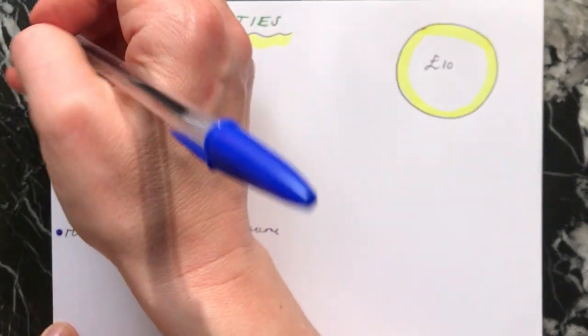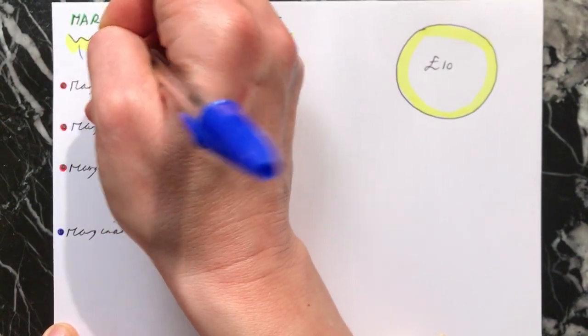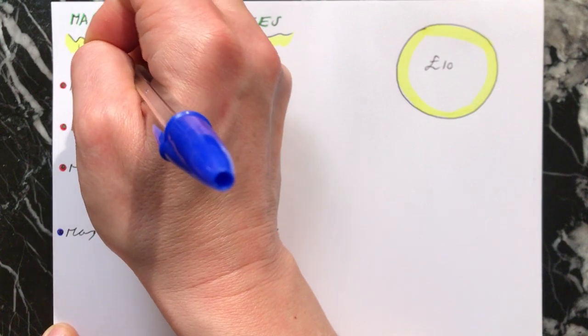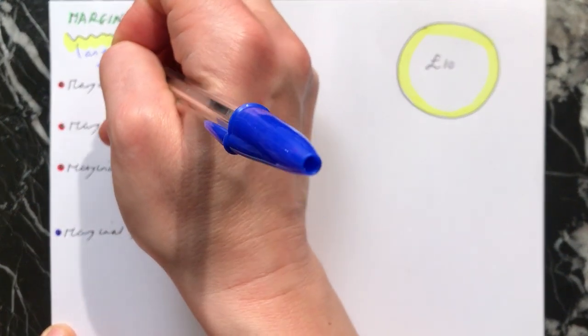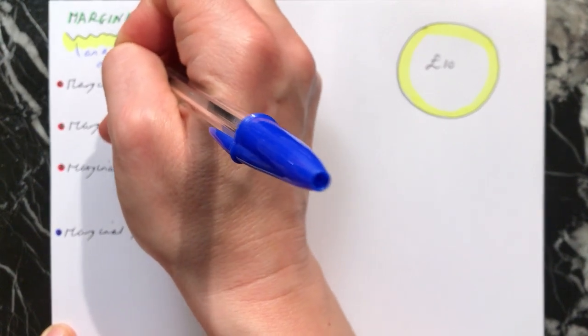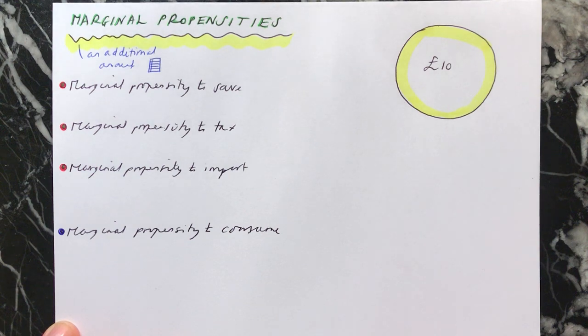We know that in economics, if something's marginal, it means we have an additional amount of something. And the way to remember this is like with a piece of lined paper, you have on the side of it a margin. It's an additional bit of paper, your margin. So the marginal amount in economics is having an additional amount of something.